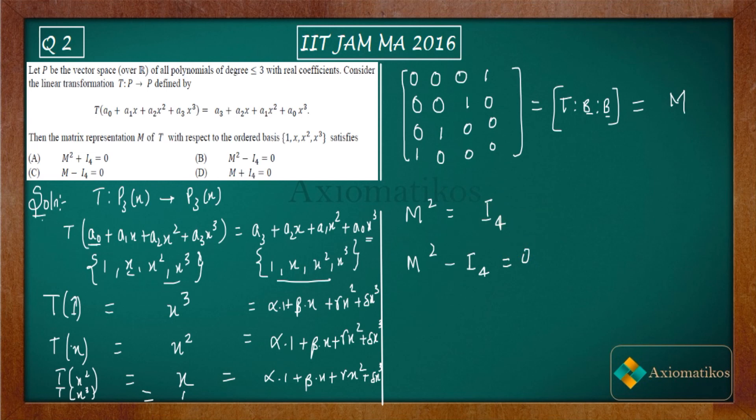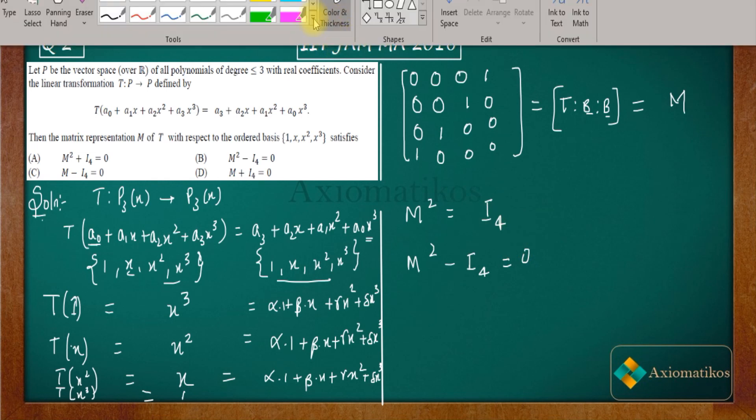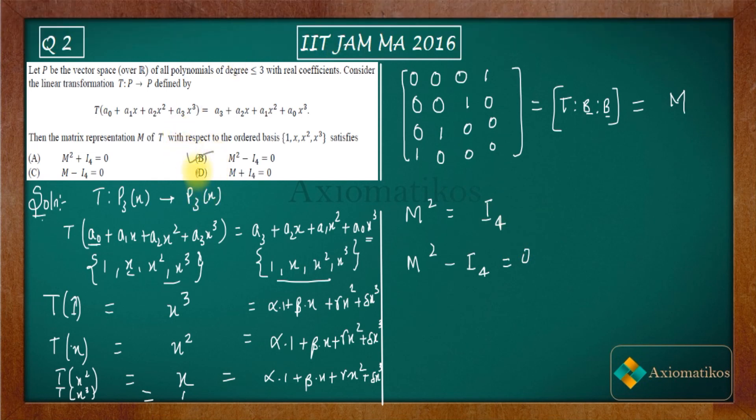So from here we can directly mark b as the correct answer. Are you getting my point? D is incorrect, C is incorrect, A is incorrect. So this is how we can solve a question. It is very easy. Writing a matrix for a given transformation is a very easy task. Nothing was difficult in this question. So thank you.